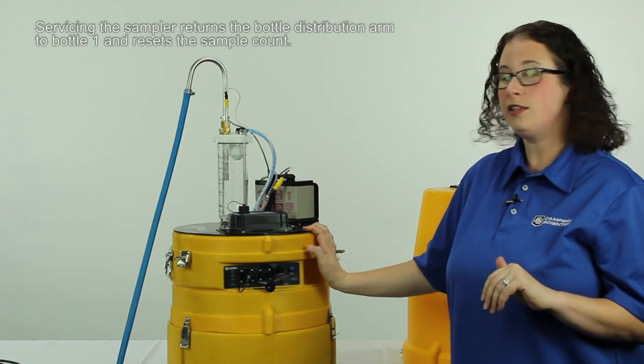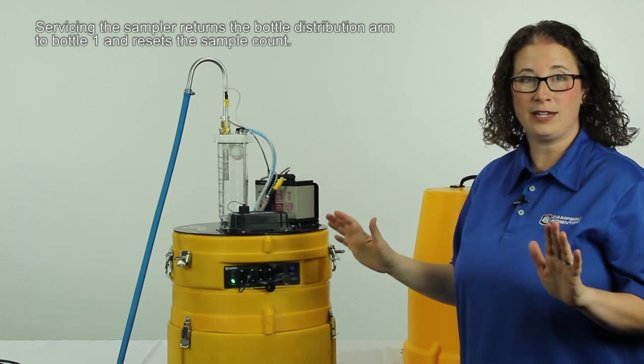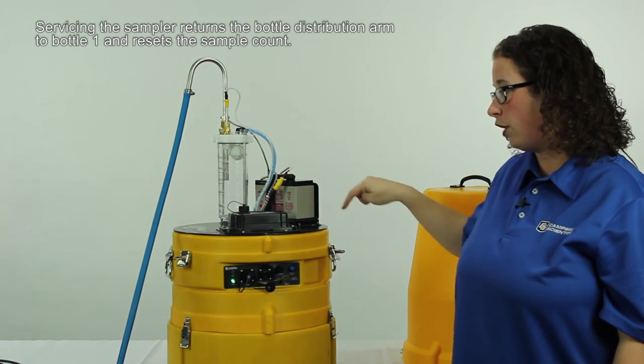You tell the sampler it's empty, go back to spot one, and you'll hear your arm move all the way back around to the home position at bottle one.